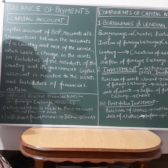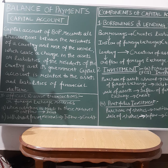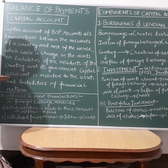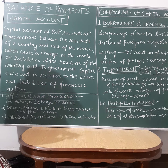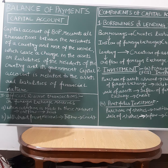So to summarize the difference: in current account, we record all those transactions which are not going to create or change any asset or liability. In capital account, we take all transactions which are going to change the asset and liability of the government. Capital account is related to assets and liabilities of a financial nature — financial assets and financial liabilities.